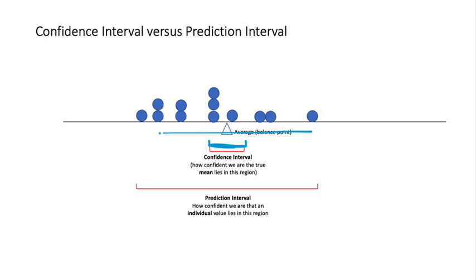Now we're looking at a prediction interval. A prediction interval tells us how confident we are that an individual value lies in this region. You have the population and don't know the mean or variance, but by sampling, we can use the sample average and sample variance to say something about individual points. This is wider because we're looking at the behavior of individual points.